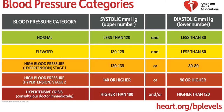According to the American Heart Association, there are five blood pressure categories ranging from normal to hypertensive crisis. Normal blood pressure is considered as a systolic pressure of less than 120 mmHg and a diastolic of less than 80 mmHg. The higher the category, the more the systolic and diastolic pressure increases.